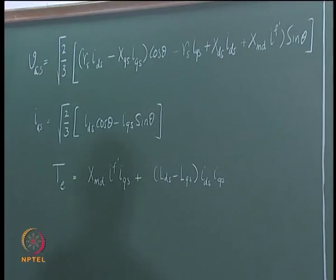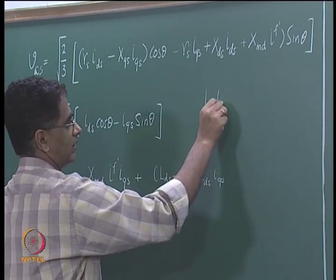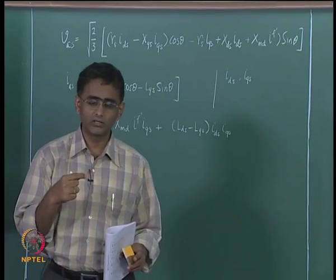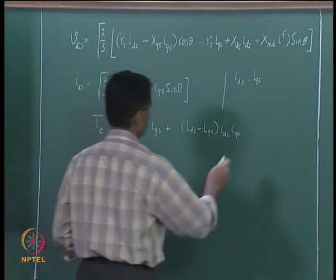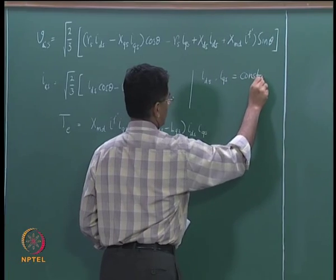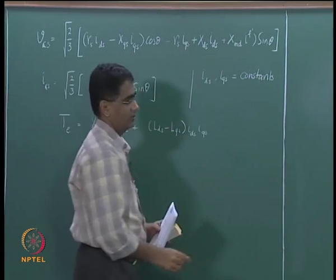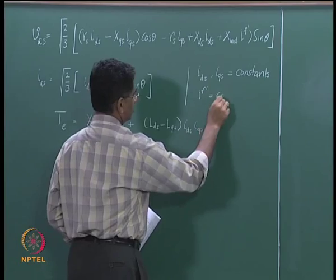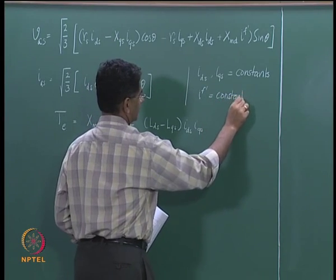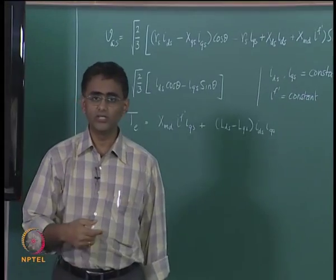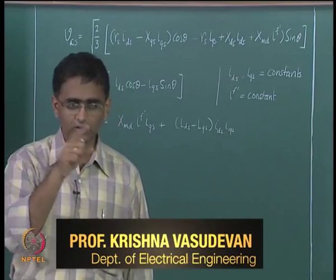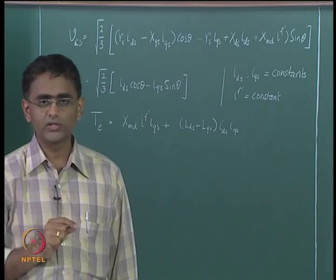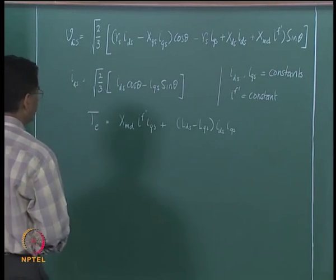In this steady state formulation, Ids and Iqs are variables in the synchronous reference frame. These quantities are essentially constants at steady state — they are DC variables. IF' is also a constant because the field current is excited with DC in the synchronous reference frame, since the rotor is already rotating at synchronous speed, and therefore IF' is constant in the synchronous reference frame.